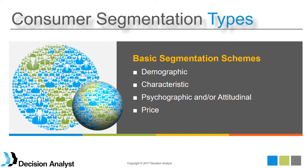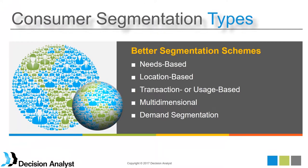Price segmentation was intuitively appealing because some consumers are more sensitive to price increases than others. Companies would automatically create product lines of the good, better, best variety to appeal to different segments. The industry then moved into needs-based segmentation, which looks at the core problems that consumers are trying to solve — things like aspirational goals, taking care of your family, or working effectively.